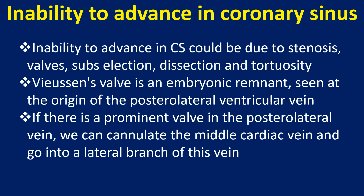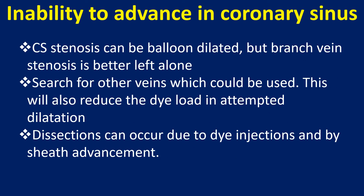Musen's valve is an embryonic remnant seen at the origin of the posterolateral ventricular vein. If there is a prominent valve in the posterolateral vein, we can cannulate the middle cardiac vein and go into a lateral branch of this vein. CS stenosis can be balloon dilated, but branch vein stenosis is better left alone — search for other veins which could be used, as this will also reduce the dye load in attempted dilatation.